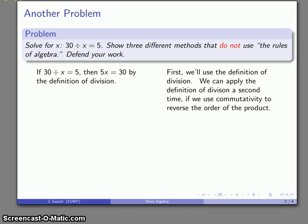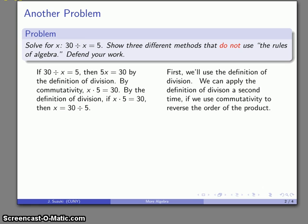Of course, I haven't actually solved for X yet, but I can apply the definition of division a second time and use commutativity and reverse the order of the product. So by commutativity, this 5 times X becomes X times 5. And by a second application of the definition of division, if X times 5 equals 30, then X is equal to 30 divided by 5. And that's just an arithmetic operation I can do without comment. So X is equal to 6.